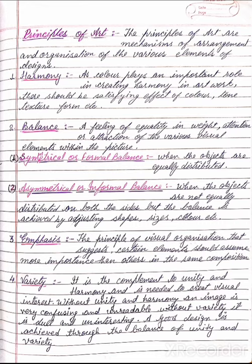The fourth principle is variety. It is the complement of unity and harmony and is needed to create visual interest. Without unity and harmony an image is very confusing and unreadable. Without variety it is dull and uninteresting. A good design is achieved through the balance of unity and variety.